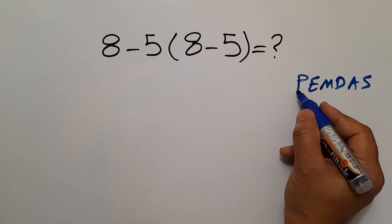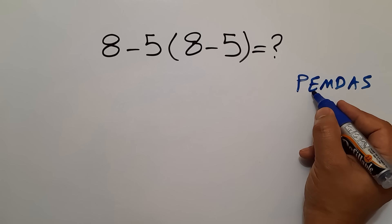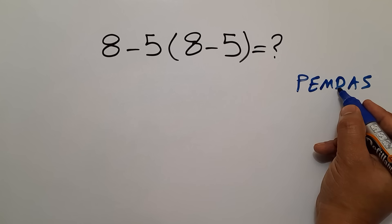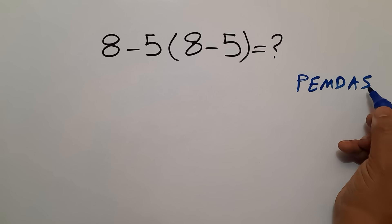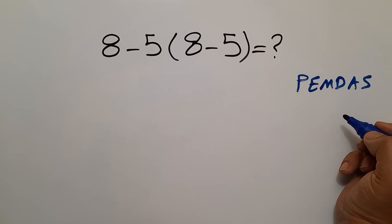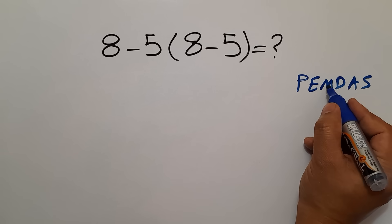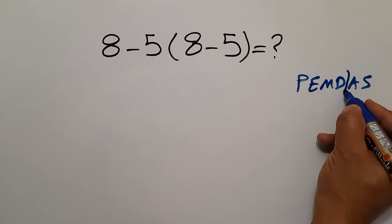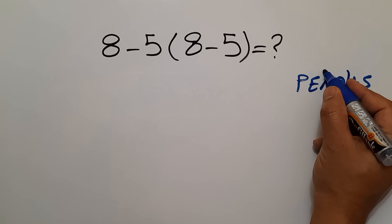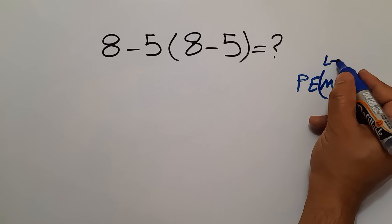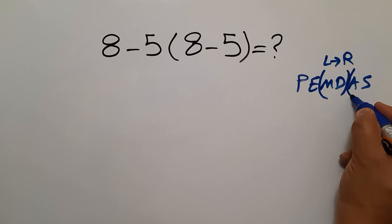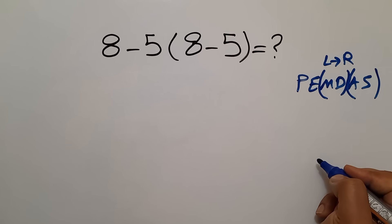First, we have to do parentheses, then exponents, then multiplication and division, and finally addition and subtraction. As we know, multiplication and division have equal priority, and we have to work from left to right. And the same applies to addition and subtraction.